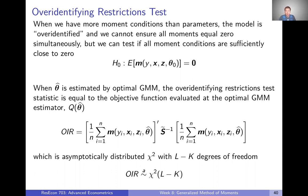The intuition here is that if some of our moment conditions are not close to zero, then the sample moments won't be close to zero either. Remember, the sample moments are going into our objective function. So the objective function of optimal GMM — if it's not close to zero — that's happening because some of our sample moments aren't close to zero. If our objective function is relatively large, we have moments that are not close to zero, and we might conclude that our moment conditions don't hold.